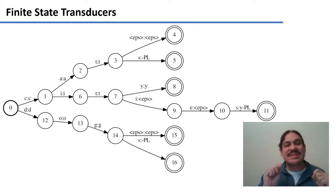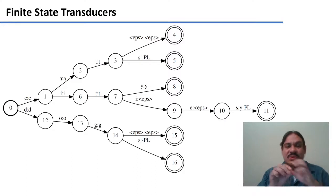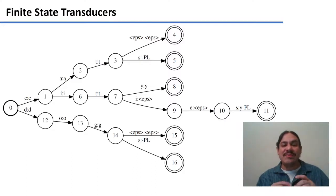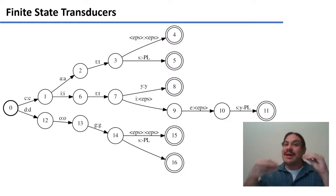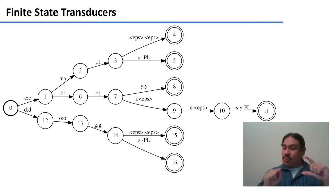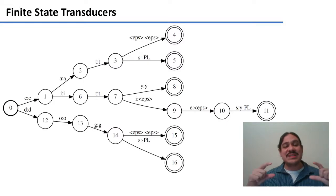Going back to state 7 — by the time we're in 7, we have the output string "CIT". From 7 to 9, you take input I and produce an epsilon output — nothing for the output. From 9 to 10, you take the E as input and give nothing for the output. You still have "CIT" as the output string, waiting to see if you'll actually get the word "cities" by the end. In the transition from 10 to 11, you get the input S, and at that point you know you saw the word "cities". Your output becomes what you had — CIT — plus Y-dash-PL, so the output is "CITY-PL". The input was "cities"; the output is "city PL".